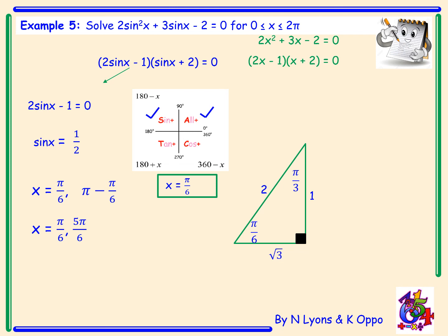From the second bracket, sin x + 2 = 0 rearranges to sin x = −2. However, there are no solutions to this. Therefore, our final answer is x = π/6 or 5π/6.